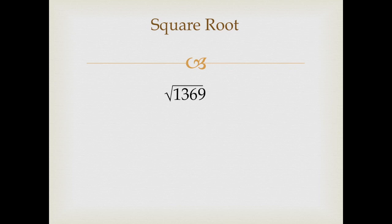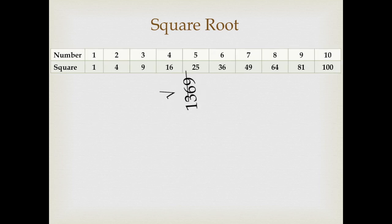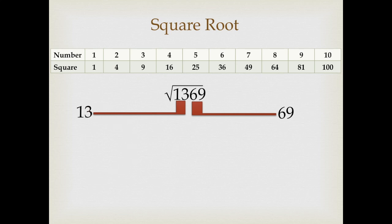Let's take one more sum. 1369 and we will find out the square root. Write down the table as it is. We will divide 1369 in two parts. The last two numbers 69 on the right hand side and 13 on the left hand side.